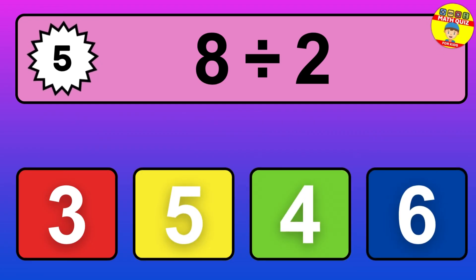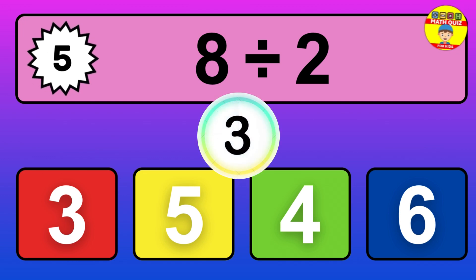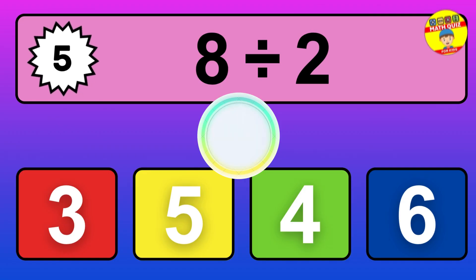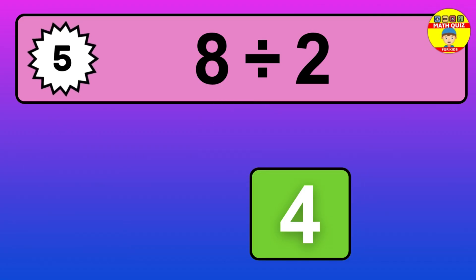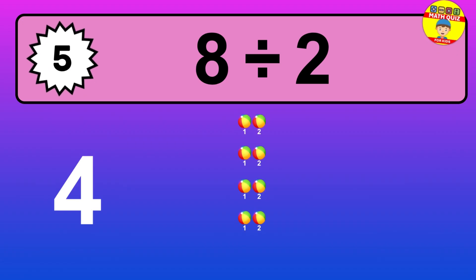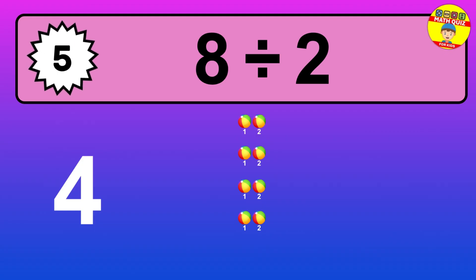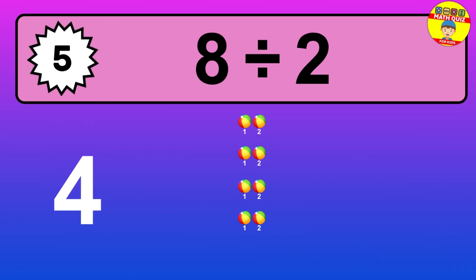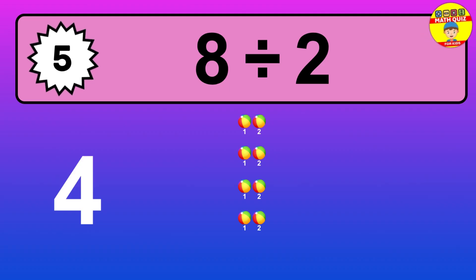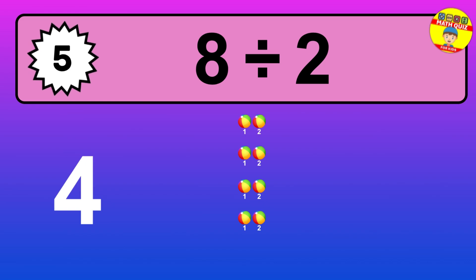What is 8 divided by 2? Picture this. You have 8 objects to divide into groups of 2. How many groups can you make? Let's think about it. Ready to find out? Let's break it down. Let's imagine you have 8 objects — can you picture them lined up? Now think about splitting them equally into smaller groups.